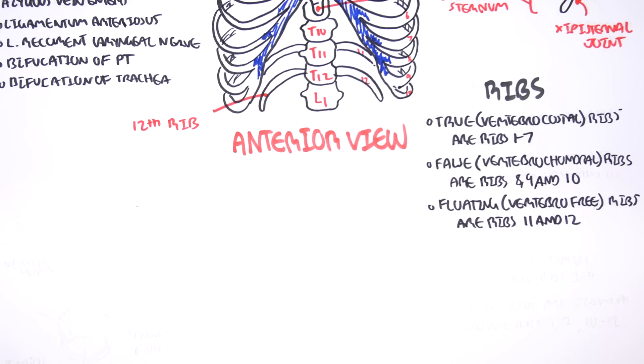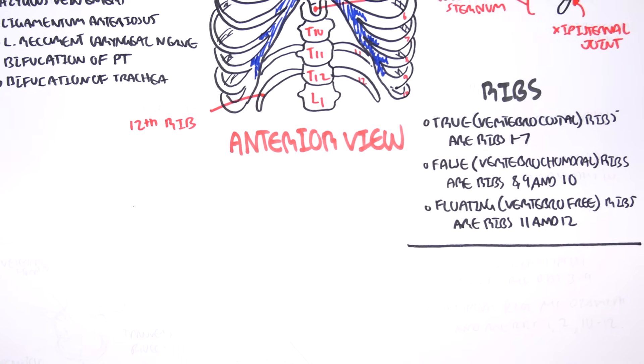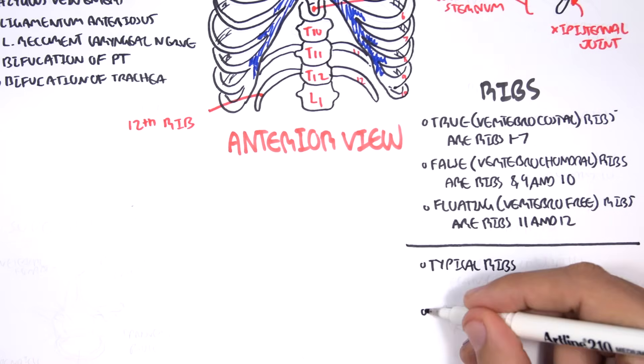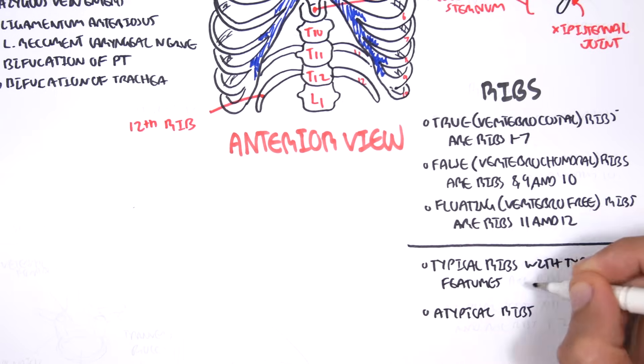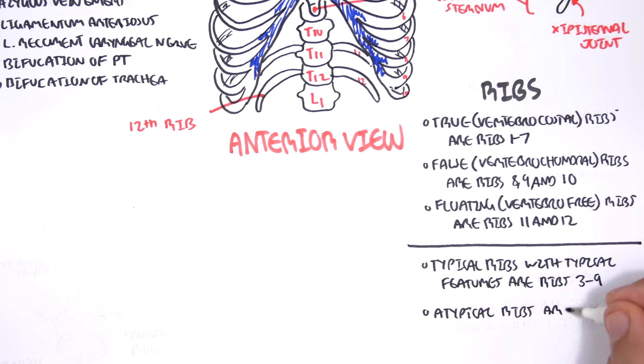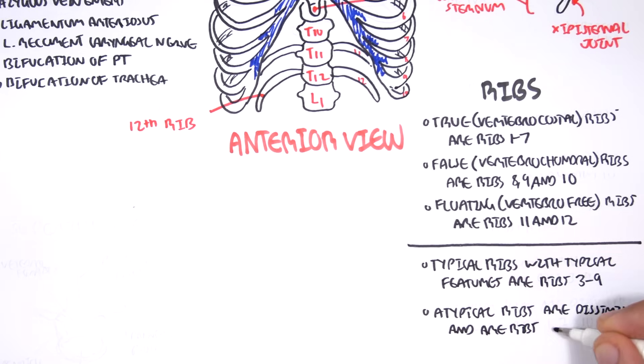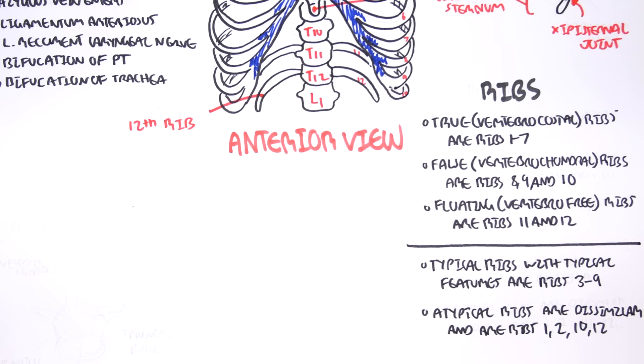Our ribs can also be divided into typical and atypical. Typical ribs are ribs with similar features, typical features. And these ribs are ribs 3 to 9. Atypical ribs are different from each other, and other ribs, and are ribs 1, ribs 2, and ribs 10 to 12.